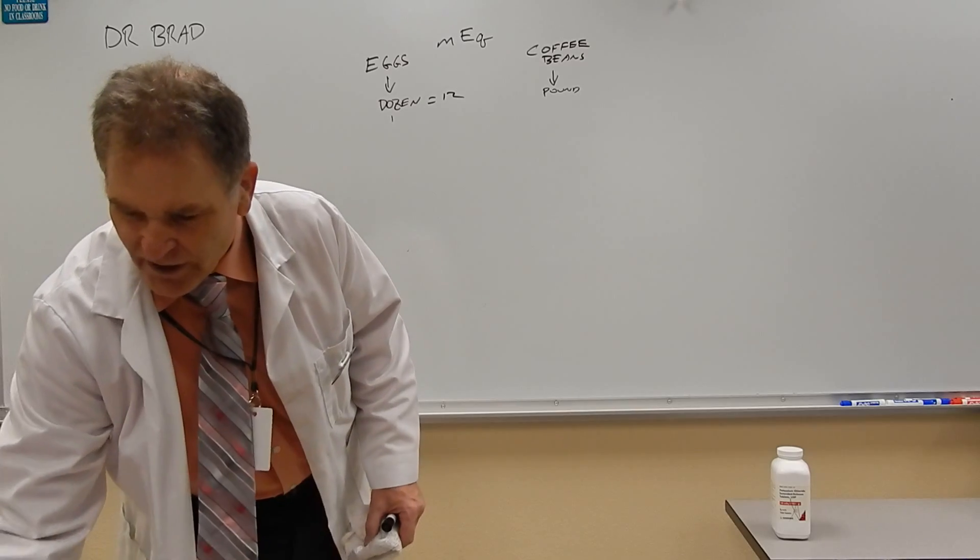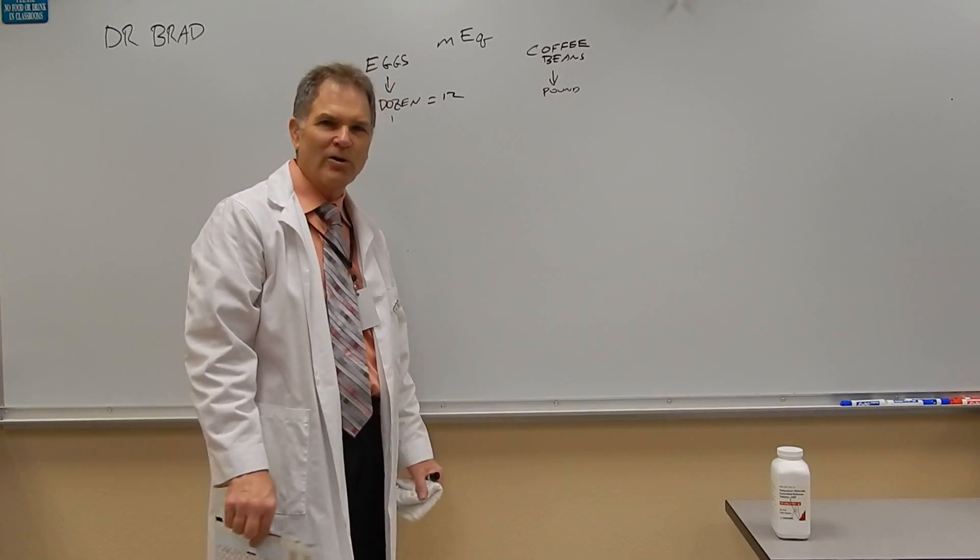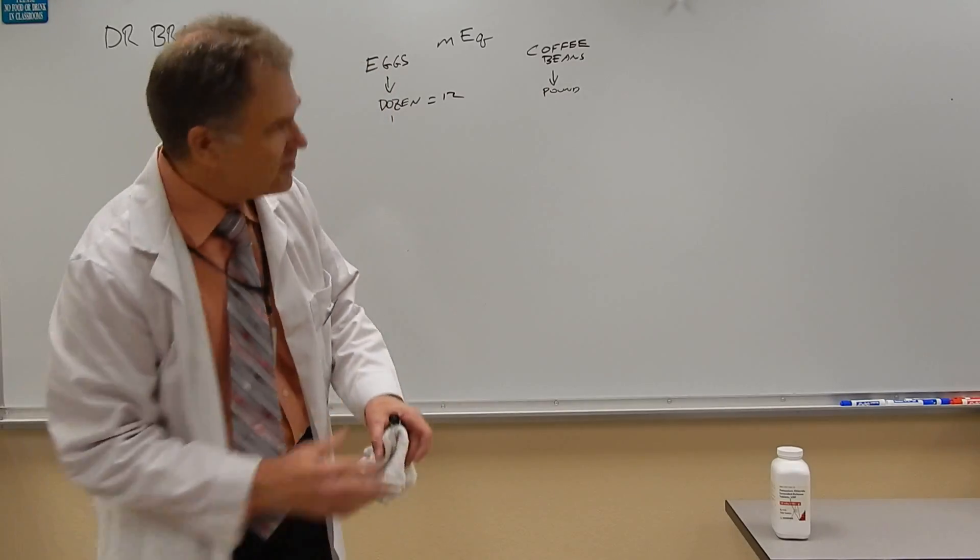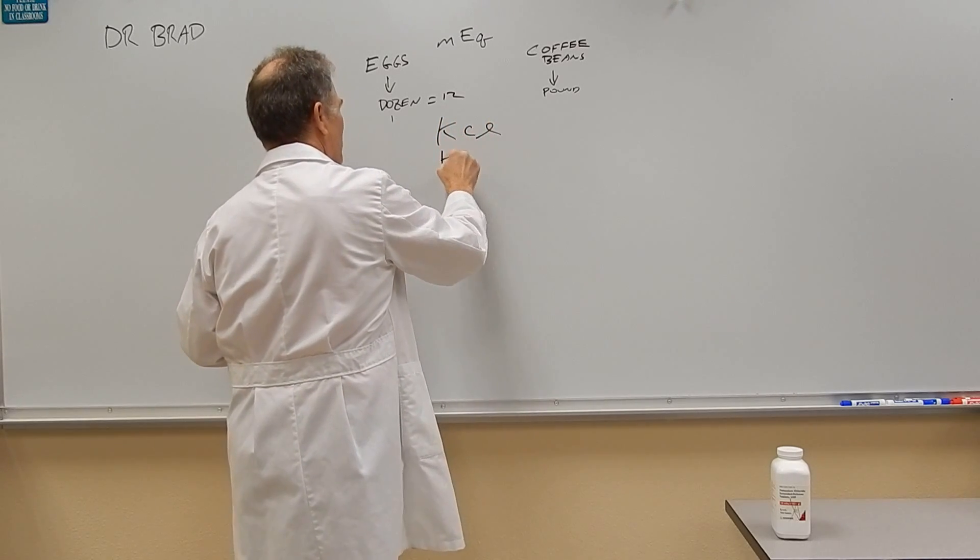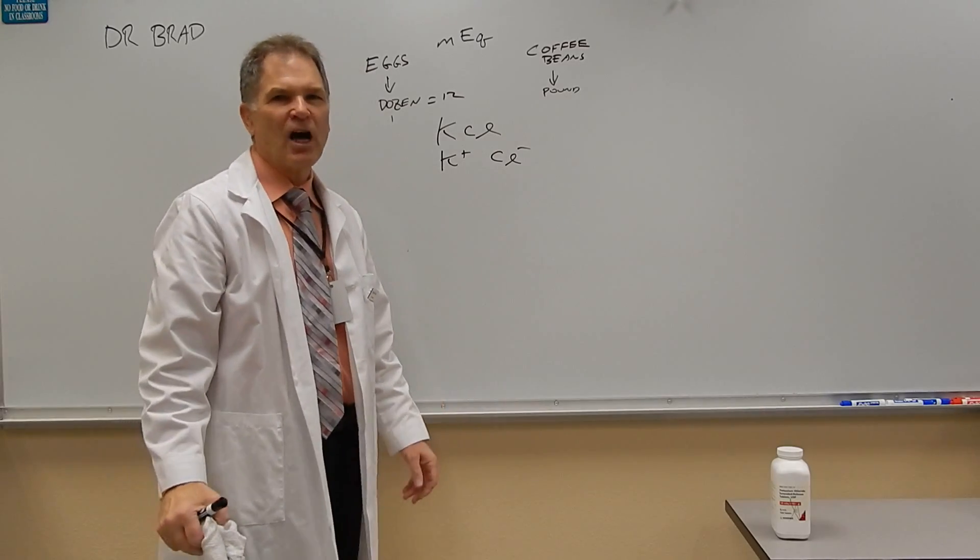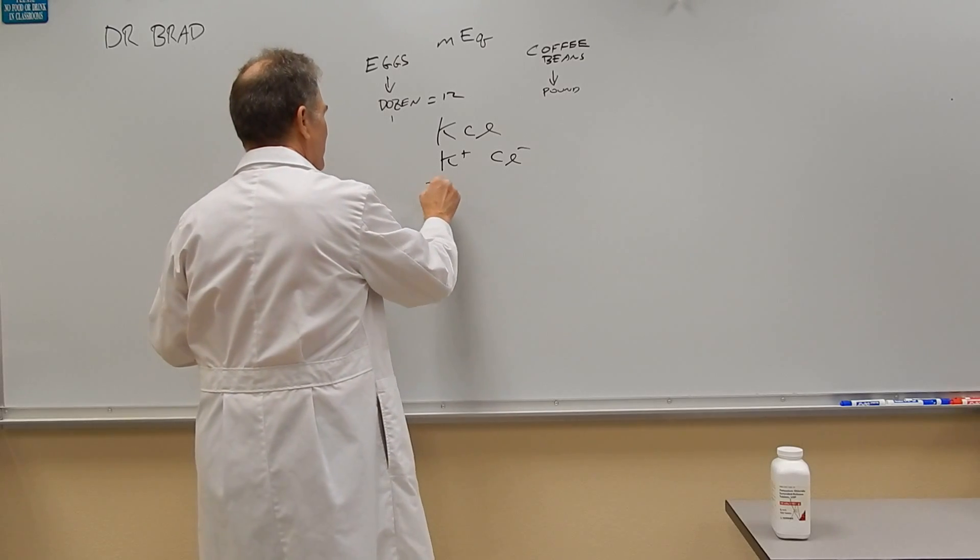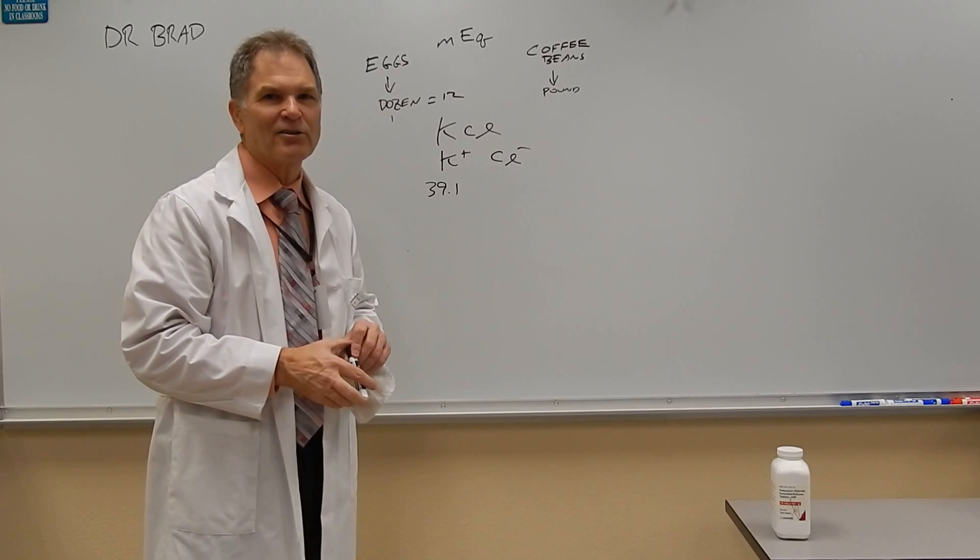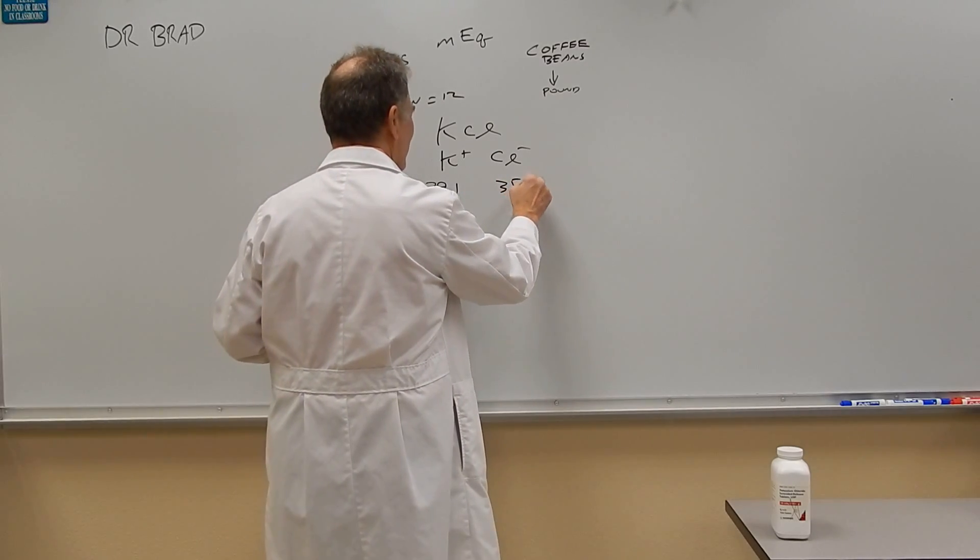So this is where the atomic mass comes in. You get the atomic mass off the periodic table, or you can Google it. Let's do potassium chloride, KCl. So you got K plus and Cl minus. You're going to look up the atomic mass of potassium, and that's going to be 39.1. And then you're going to look up the atomic mass of chloride or chlorine, that's going to be 35.5.